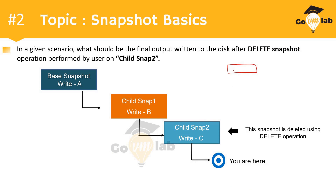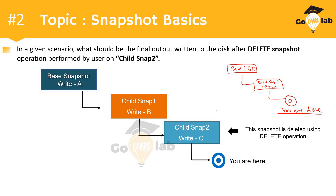The final diagram looks like this: you have a base snapshot with value A, then a child snap 1 which not only has its own data B but also the new data C coming from the deleted child snap 2. The current state is now at child snap 1. That is the final output of this scenario when the user performs delete operation on snap 2.